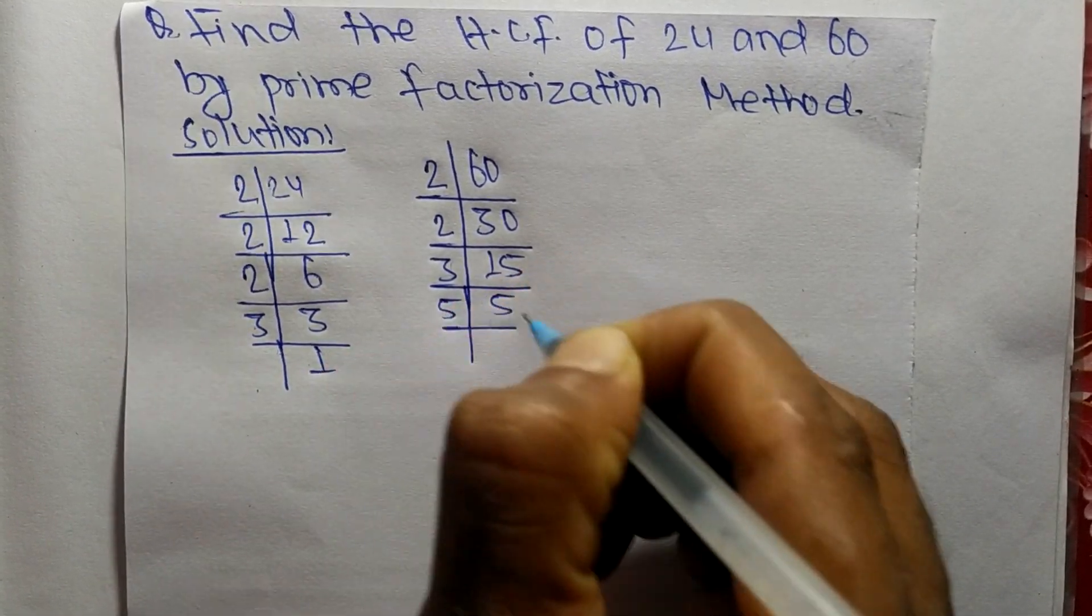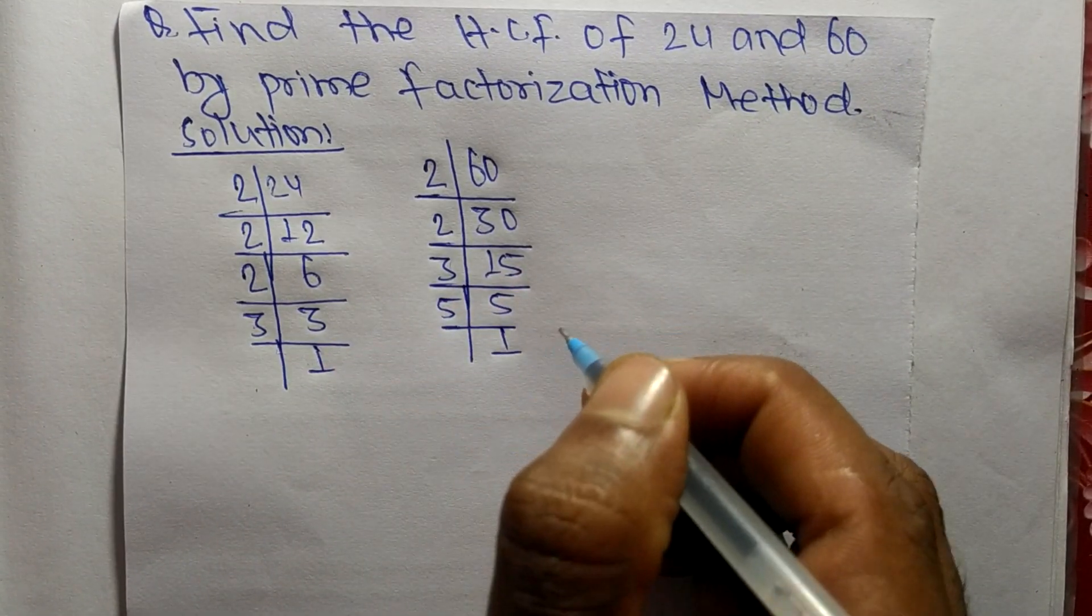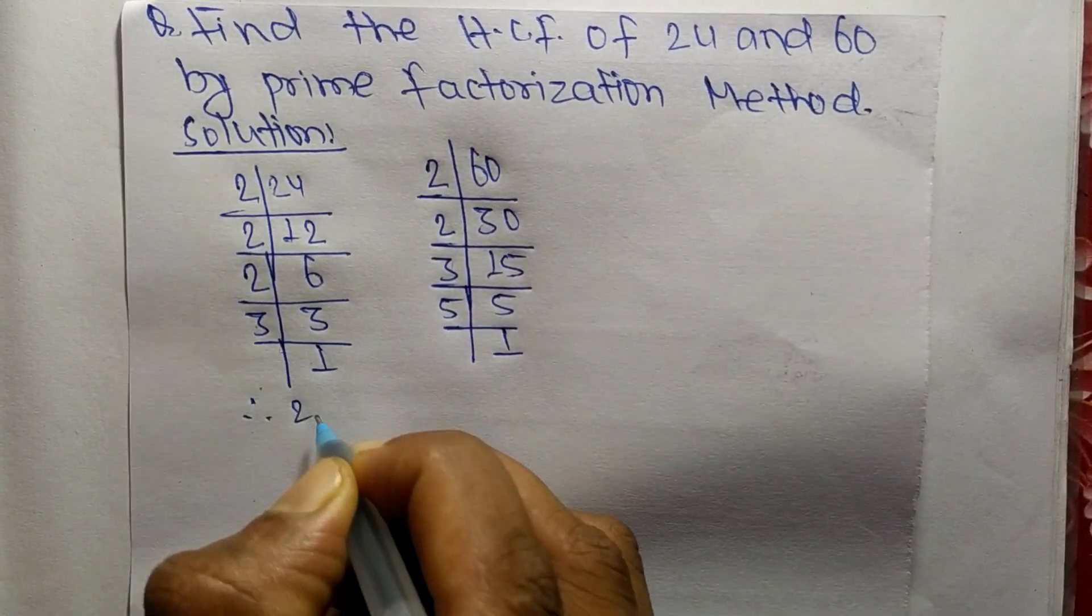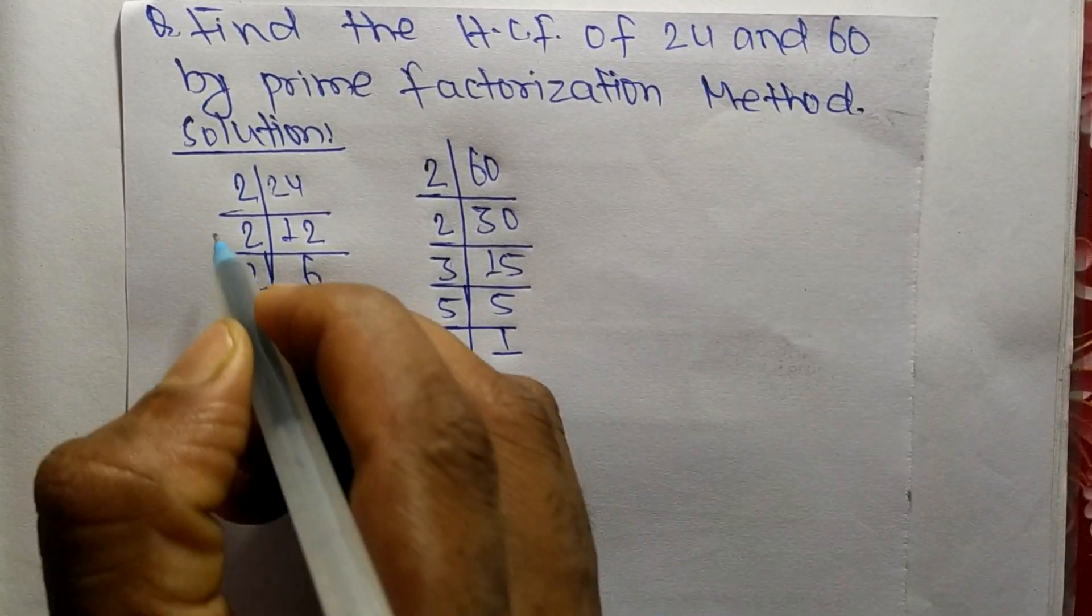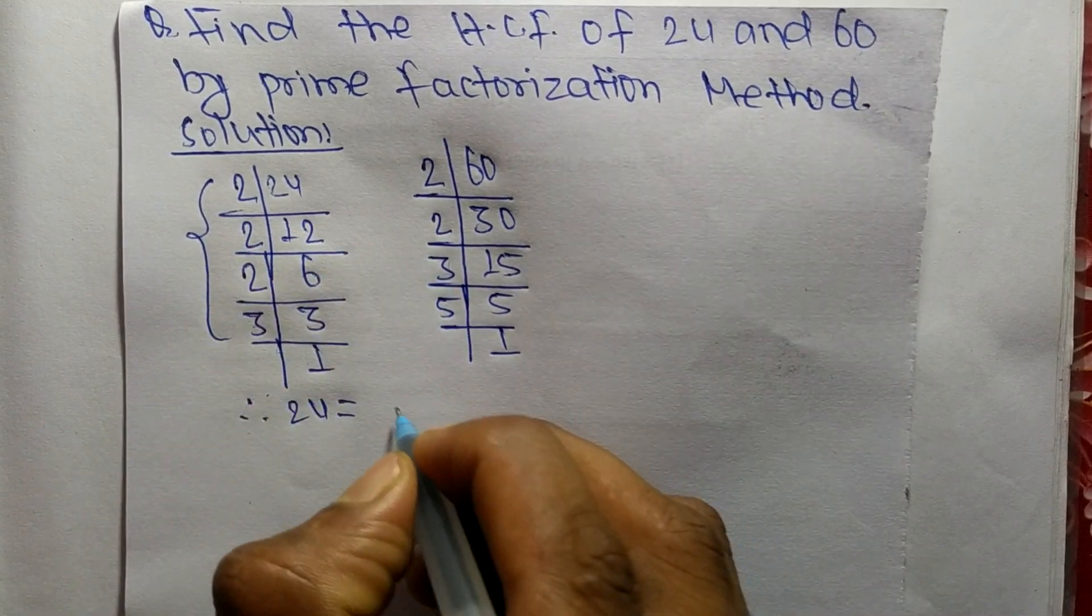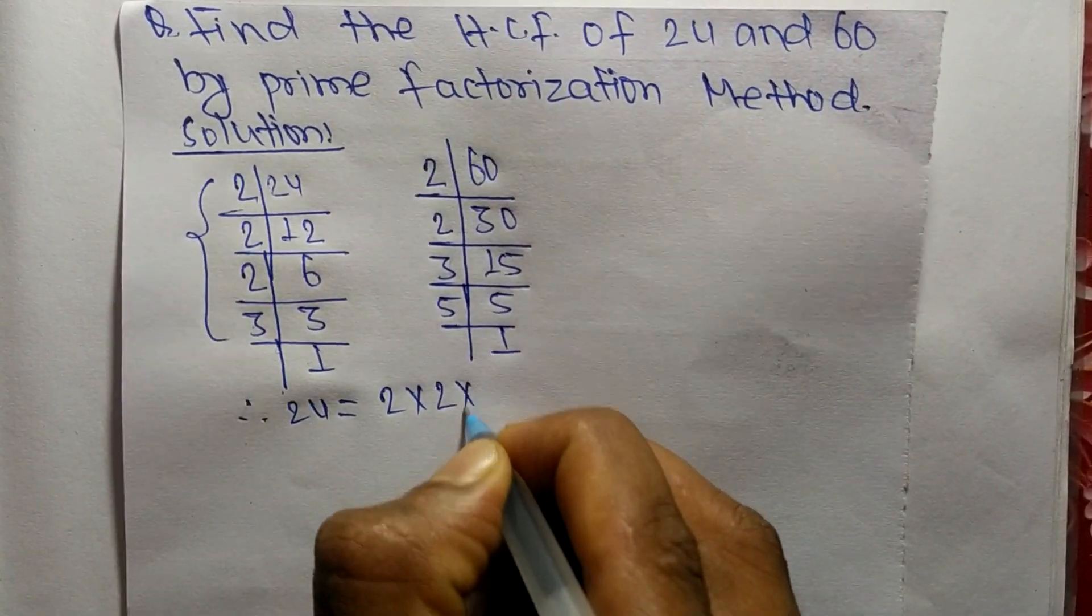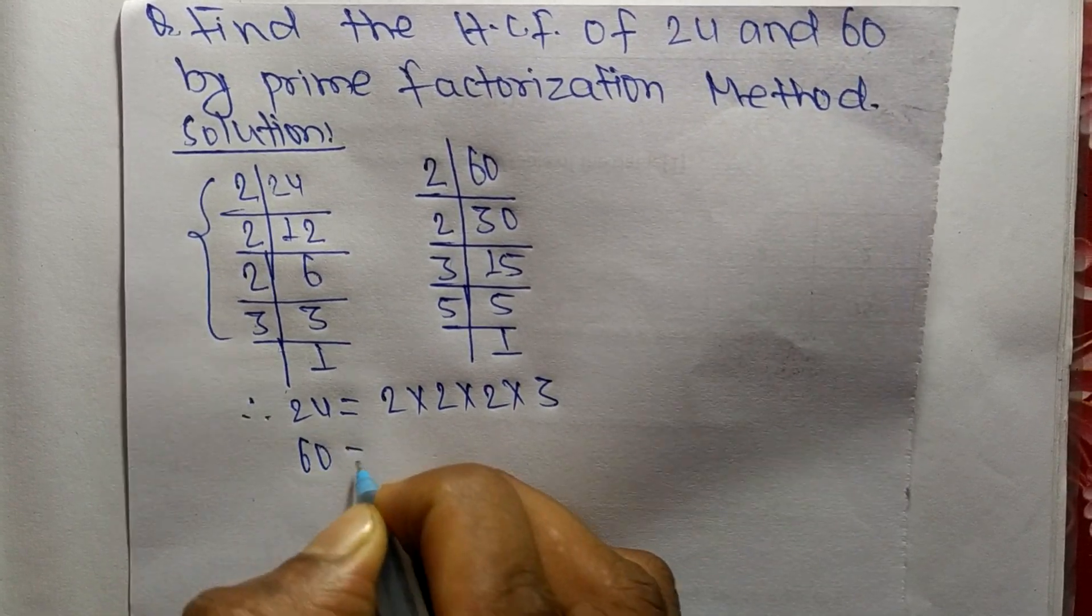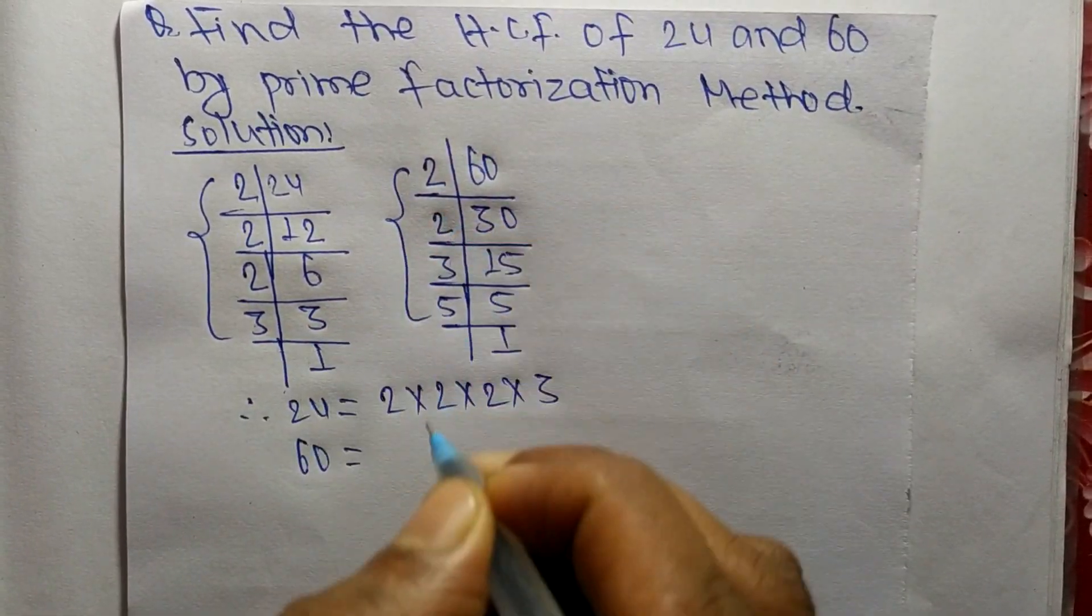And 5 times 1 equals 5. From these prime factors we can write: 24 equals 2 times 2 times 2 times 3, and 60 equals 2 times 2 times 3 times 5.